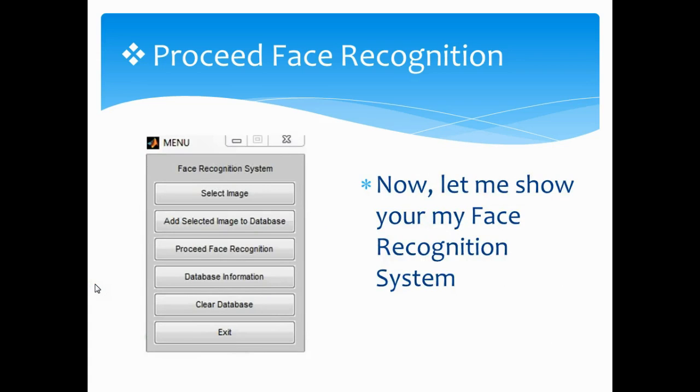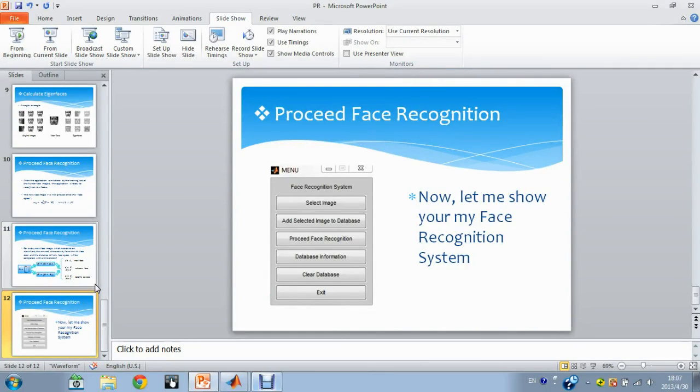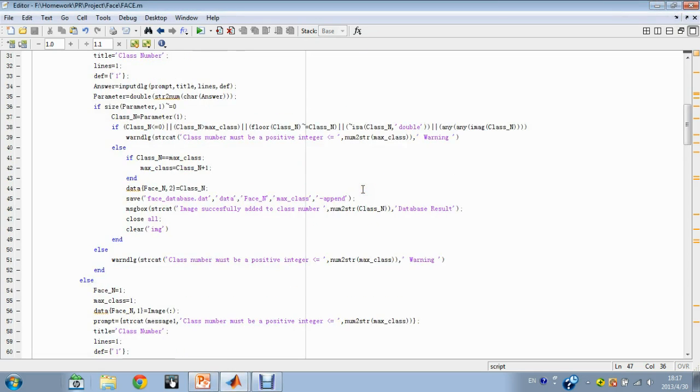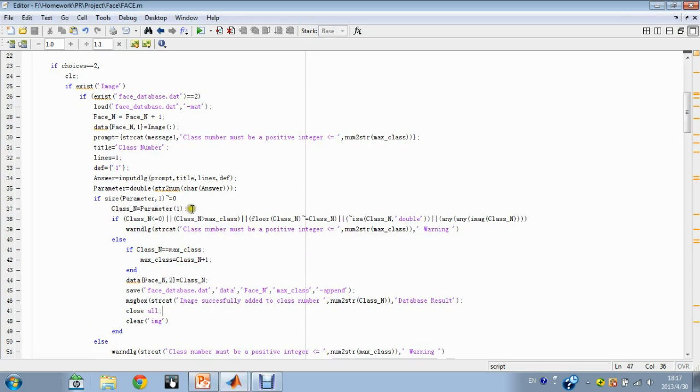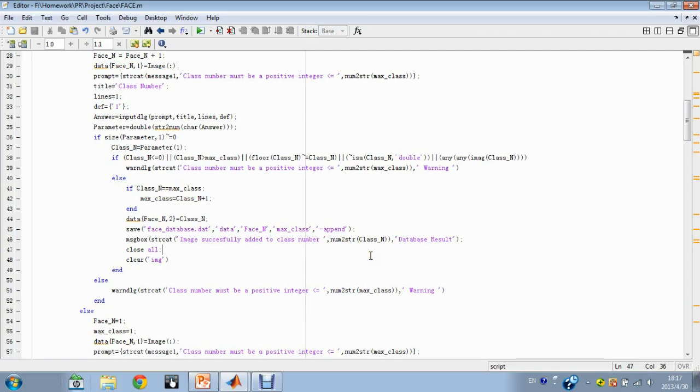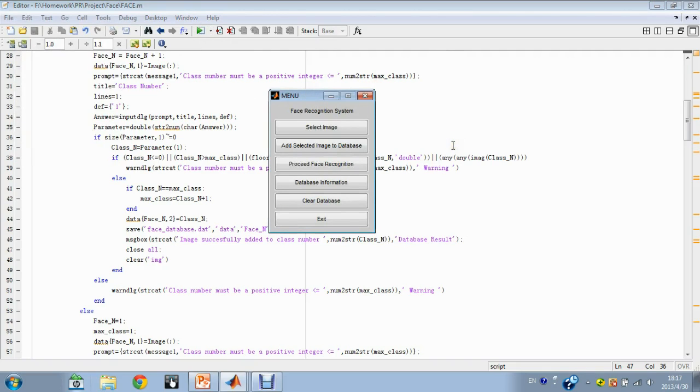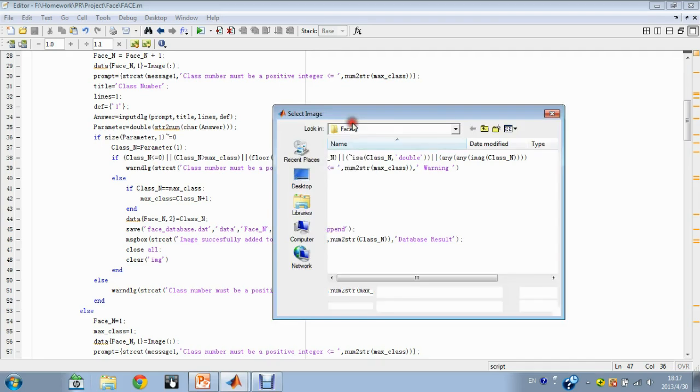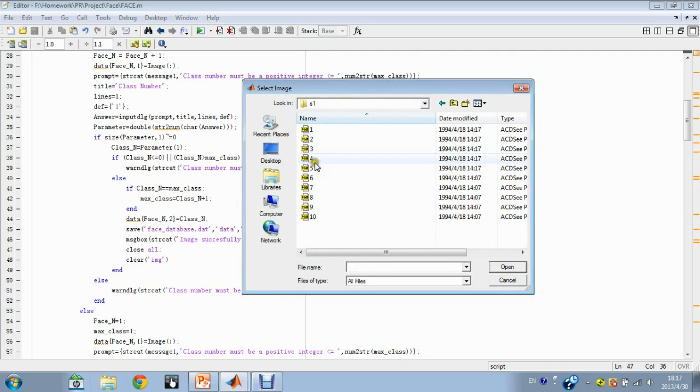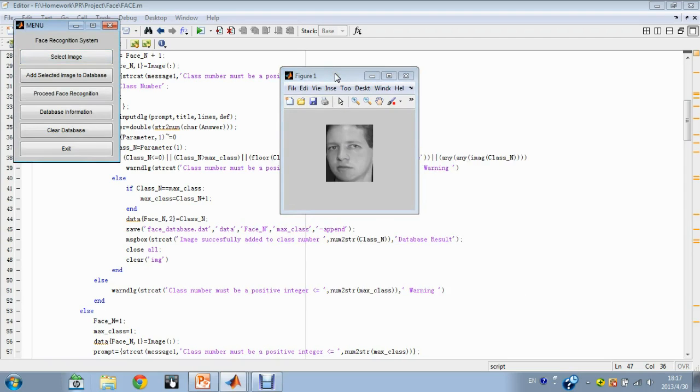Now let me show you my face recognition system. Here is the program. The program is written using MATLAB. The training and testing images are from AT&T lab. Click run and this is the menu of the face recognition system. Click select image and select an image from the computer. Click open and the image will be shown on the screen.